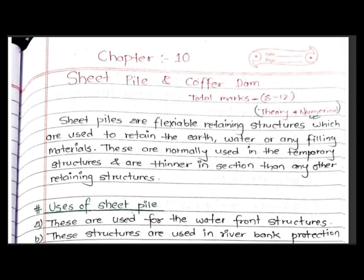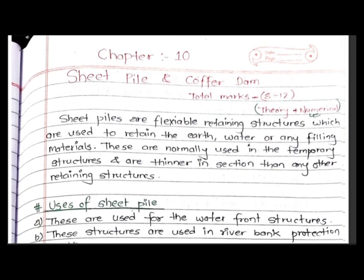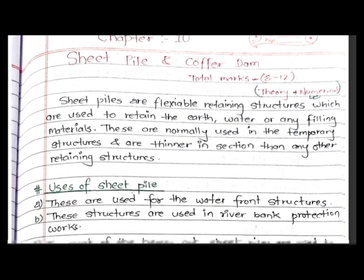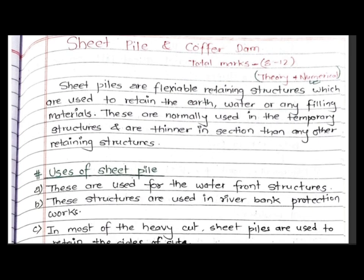Today we are going to cover Chapter 10: Sheet Pile and Coffer Dam. Sheet piles are flexible retaining structures which are used to retain the earth, water, or any filling material. These are normally used in temporary structures and are thinner in sections than any other retaining structures.